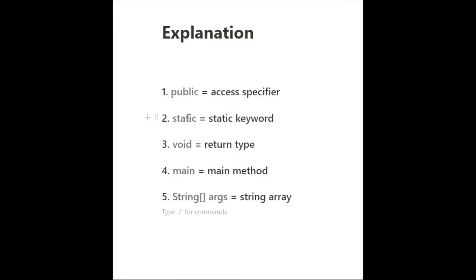Next is `static`. We use the static keyword because if you use it with any method, you do not need to create an object for that method. This makes it easy for JVM to call the main method without creating an object. Whenever JVM calls the main method, it does not have to create any object — that is why we use static.